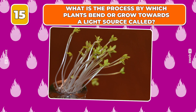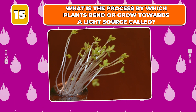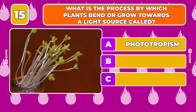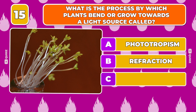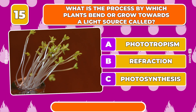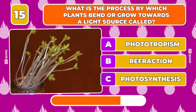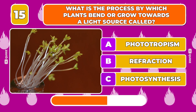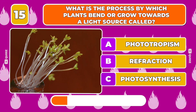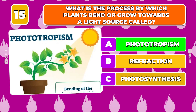Question 15. What is the process by which plants bend or grow towards a light source called? Phototropism, Refraction, Photosynthesis. The answer is phototropism.